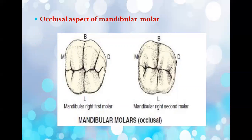The next question was about the occlusal aspect of the mandibular molar — I think it was the mandibular second molar but I am not sure. The occlusal aspect of the mandibular first molar includes 5 cusps, while the mandibular second molar includes 4 cusps — 2 lingual and 2 buccal. The mandibular second molar differs from the first in that no distal cusp is present and all cusps are of equal size, with a well-defined central groove crossed in buccal and lingual directions.